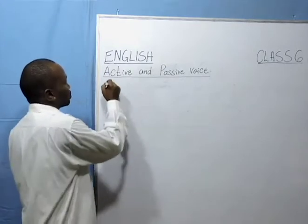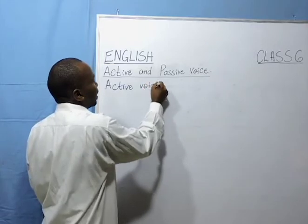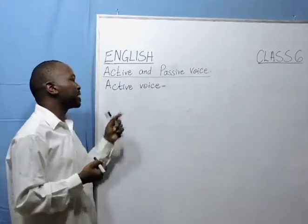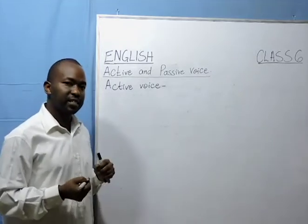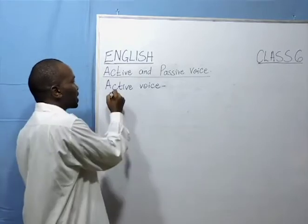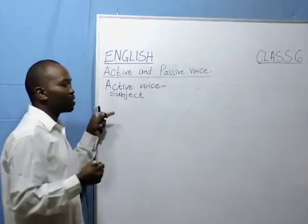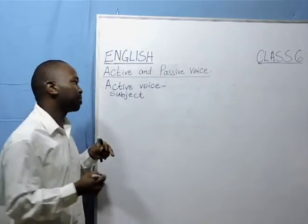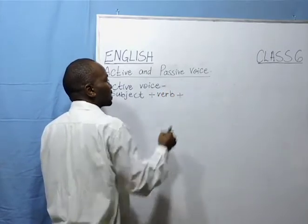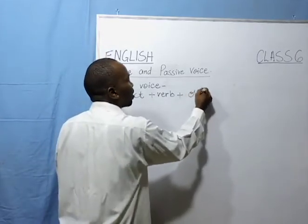Let's start with the active voice. What does this mean? It means that the order of the sentence will follow this pattern. It will start with the subject, followed by the verb in that sentence, then finally we shall have the object.